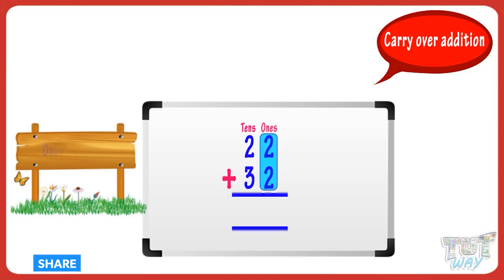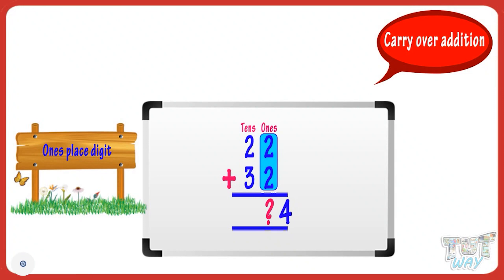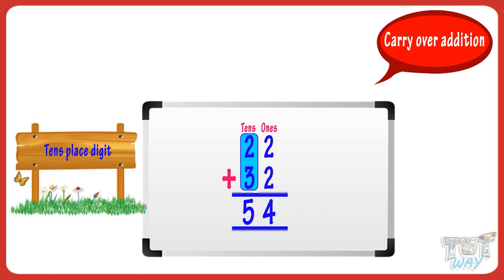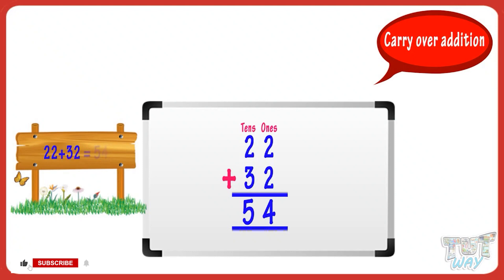First, add the ones place digits. Two plus two equals four. Write the sum below the ones place digits. Now add the tens place digits and write the sum below the tens place digits. So we get 22 plus 32 equals 54.